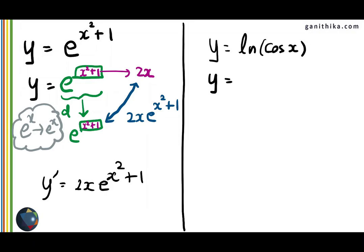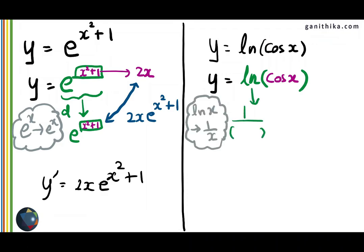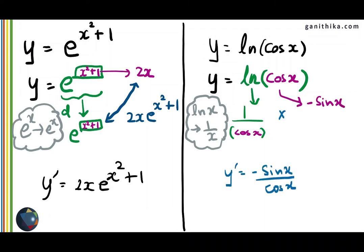Identify the outer function and inner function, differentiate the outer function keeping the inner function as it is, then differentiate the inner function and multiply them both. This is the bottom line of chain rule. Let us see another example: ln of cos of x. The outer function is ln, the inner function is cos. Differentiating ln x gives 1 over x, but in the place of x we write the inner function as it is, which becomes cos x. So 1 over cos x multiplied by the derivative of cos x, which is minus sin x, gives minus sin x over cos x, which simplifies to minus tan x. The derivative of ln of cos x is minus tan x.